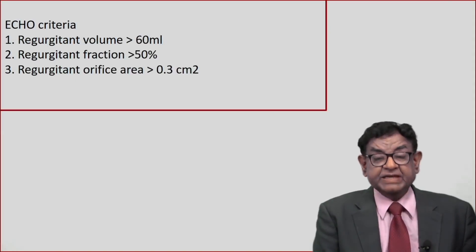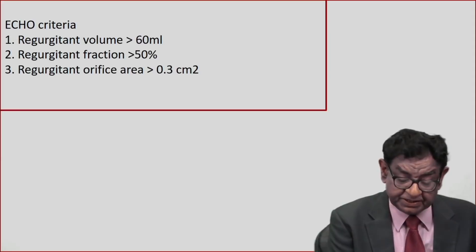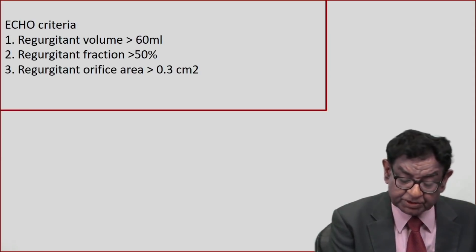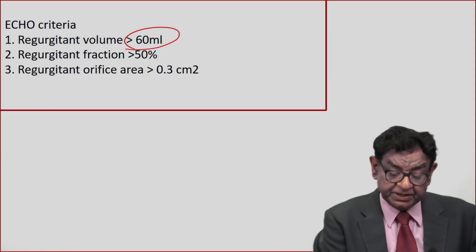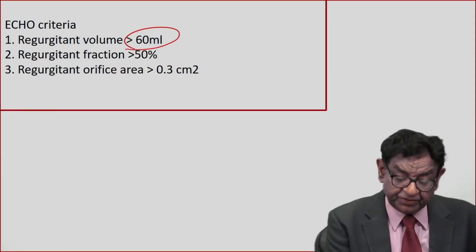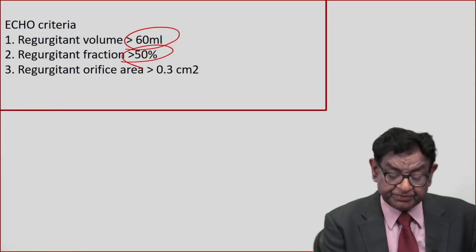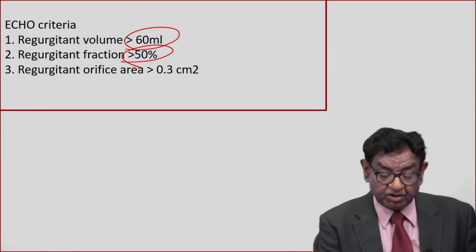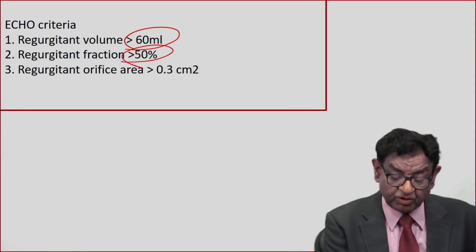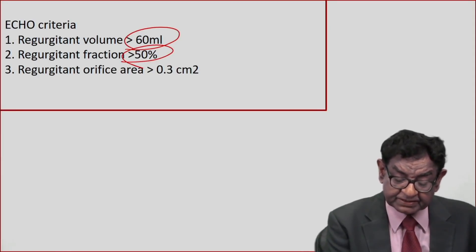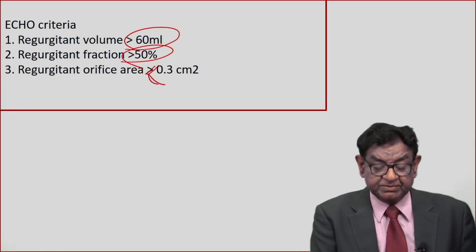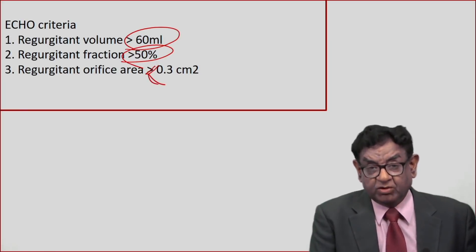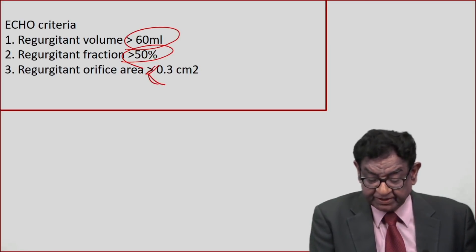Echocardiography criteria for severe AR: regurgitant volume more than 60 ml, regurgitant fraction more than 50%, or orifice area less than 0.3 square centimeters — these are all features of severe AR.